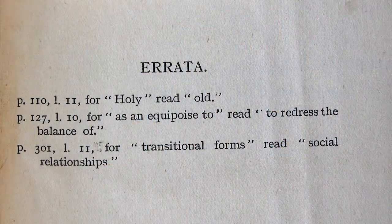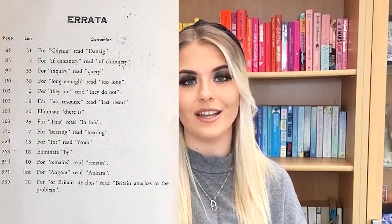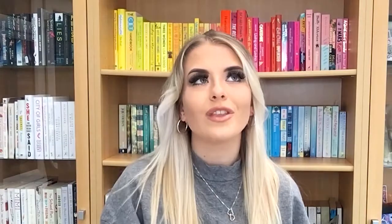Next up is errata, which is a note from the publishers stating any errors that are in that edition of the book. Next up is a glossary — a lot of people know what that is, but it's essentially a list of key terms and what they mean. This is common in nonfiction books, and I'm pretty sure some Shakespeare books have it as well, explaining old English language terms and what they mean in modern English.